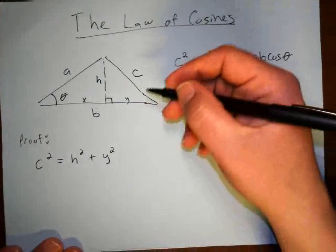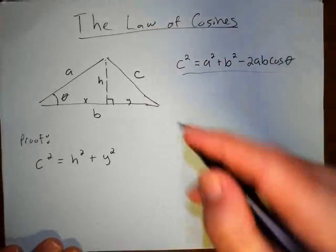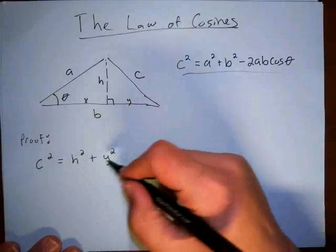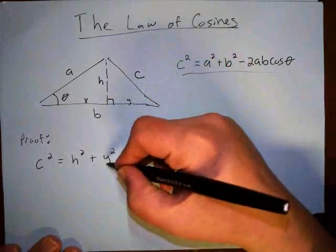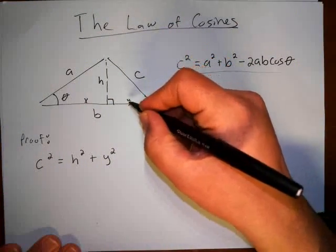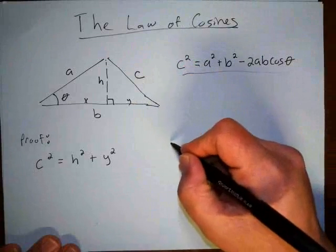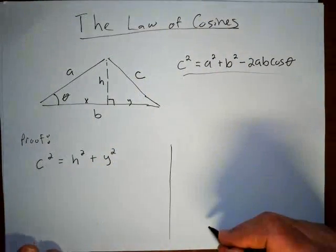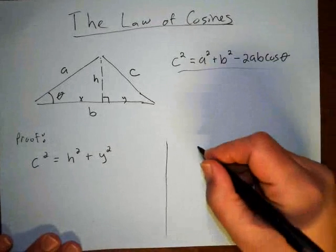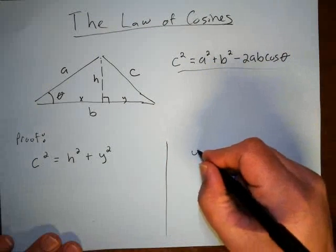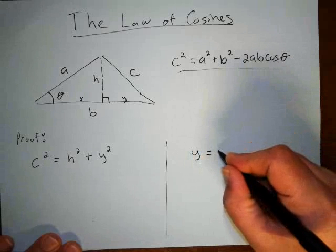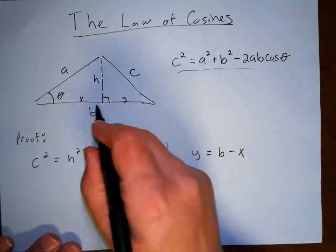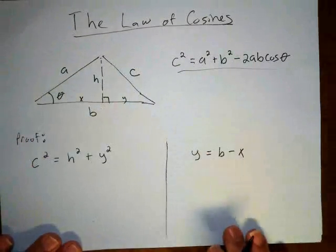Now I'm going to substitute things in for H squared and Y squared. First, for Y: I notice that Y is equal to B minus X, because the whole side is B, this part is X, so Y is just B minus X.